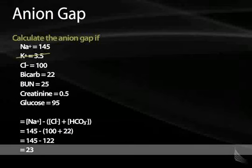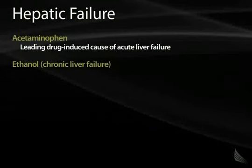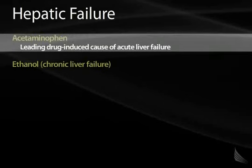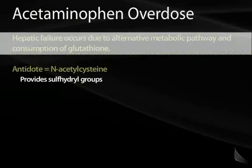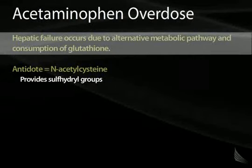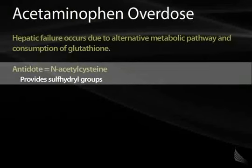With regard to hepatic failure, the most common cause of drug-induced liver failure is acetaminophen or Tylenol toxicity. Alcohol is also a major cause of liver failure, especially in patients over the age of 40. Hepatic failure from acetaminophen occurs because of consumption of the normal metabolic pathway and initiation of an alternative metabolic pathway. N-acetylcysteine is the antidote for acetaminophen overdose, also known as mucomist — it's a reducing agent containing sulfhydryl groups.